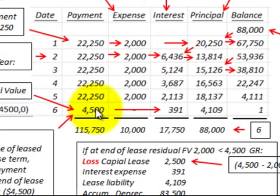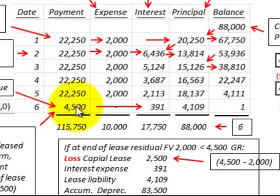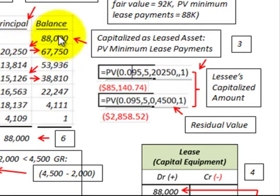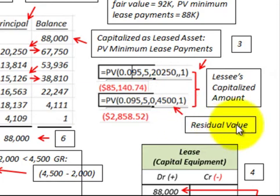Since this guaranteed residual value is recognized at the end of year five but payments are at the beginning of the year, we discount the $4,500 back to its present value at the beginning of year five using a 9.5% discount rate. The present value is $4,109. Subtracting $4,109 from $4,500 gives an interest component of $391. We also discount the $4,500 back over the full five years at 9.5%, giving a present value of $2,858.